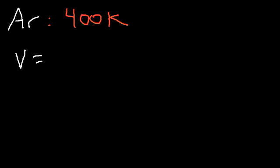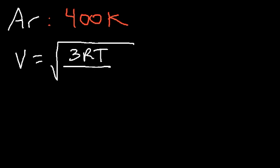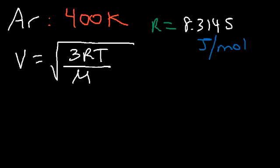Velocity is simply speed with direction. The equation that you need is V — or sometimes you might see a U symbol — equal to the square root of 3RT divided by the molar mass of the gas. R is the energy constant 8.3145 joules per mole per Kelvin. You don't want to use the 0.08206 number. T is the temperature in Kelvin, and M is the molar mass.